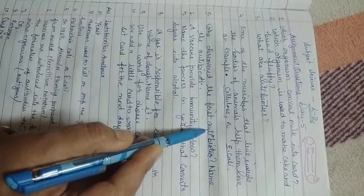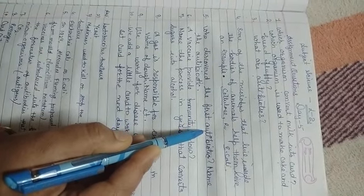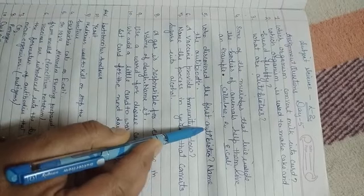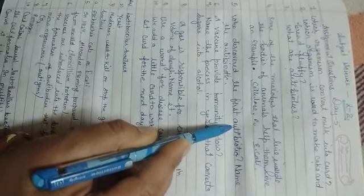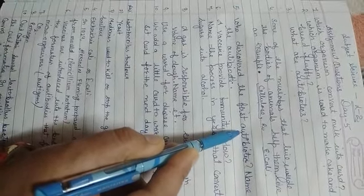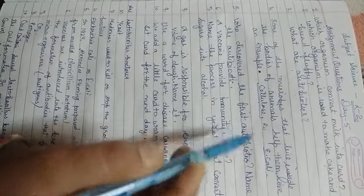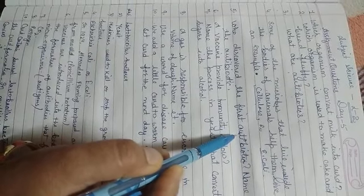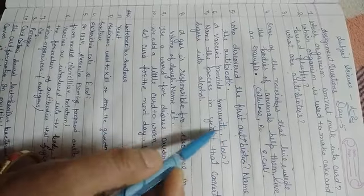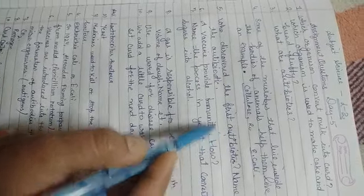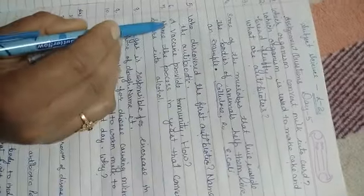Who discovered the first antibiotic? Name the antibiotic. The first antibiotic was discovered by Alexander Fleming in 1924 and the name of the antibiotic is penicillin. He derived penicillin from a mold called Penicillium notatum.